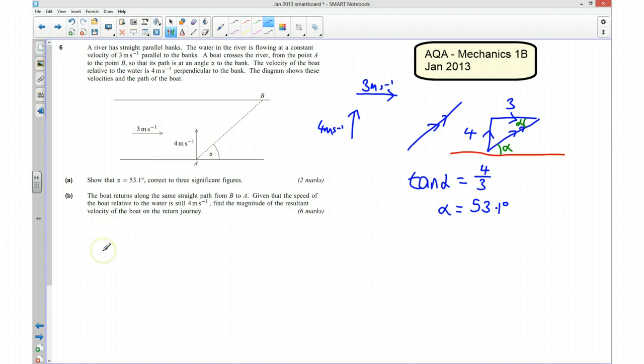For part B, it says the boat returns along the same straight path from B to A. Given that the speed of the boat relative to the water is still 4 meters per second, find the magnitude of the resultant velocity of the boat on the return journey.